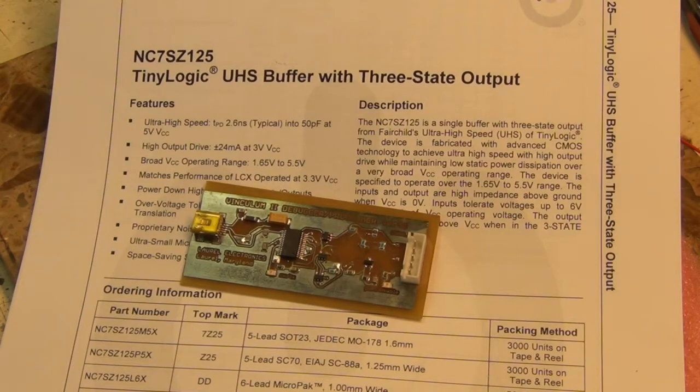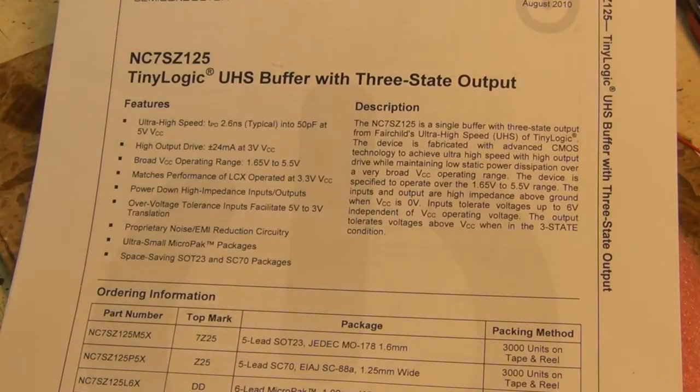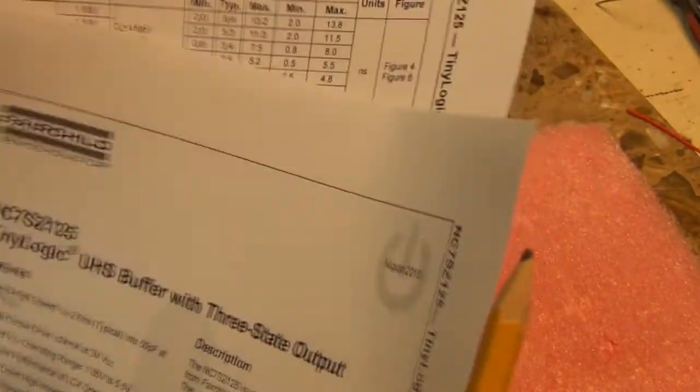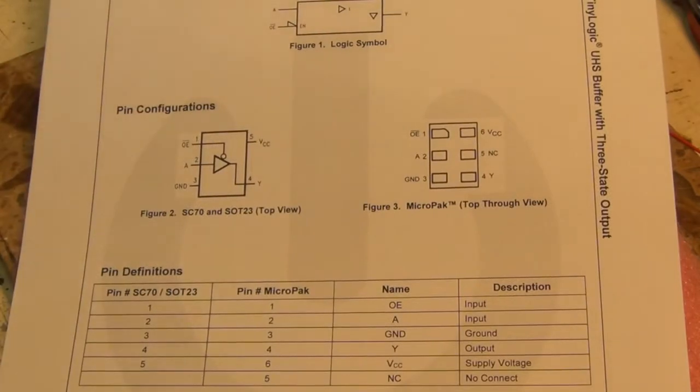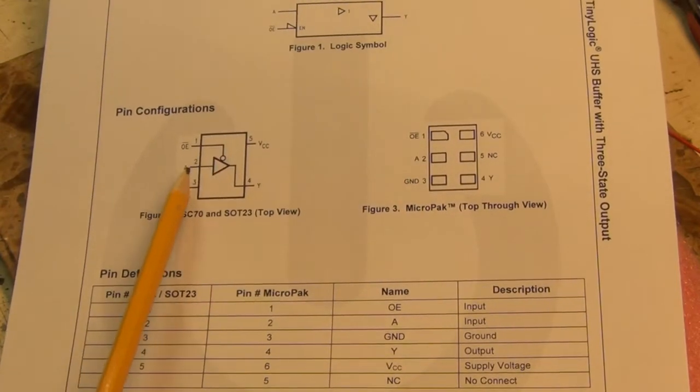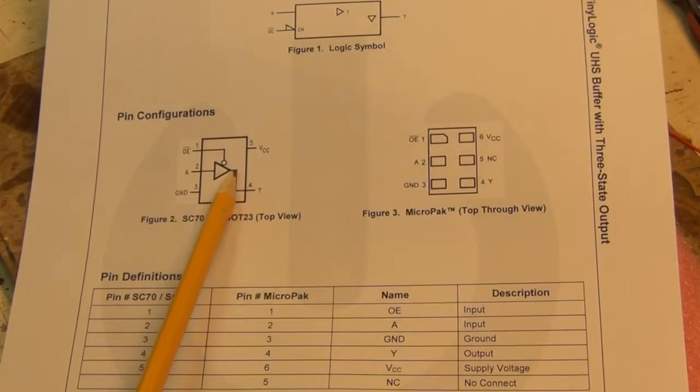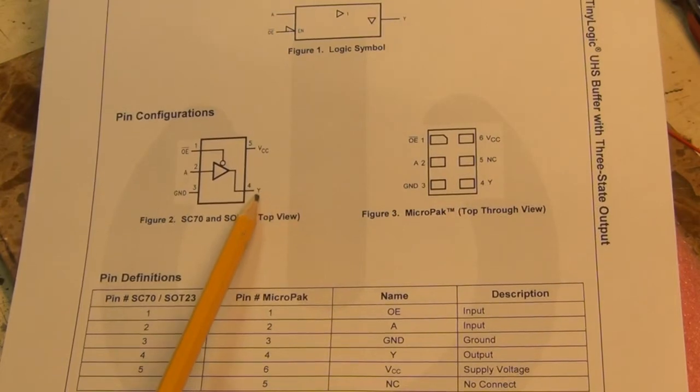Now, I thought it was kind of interesting to take a closer look at this high-speed buffer chip, and the way this chip works is if the output enable is grounded, then the signal that comes in here, the logic signal that comes in here, comes out on this pin.